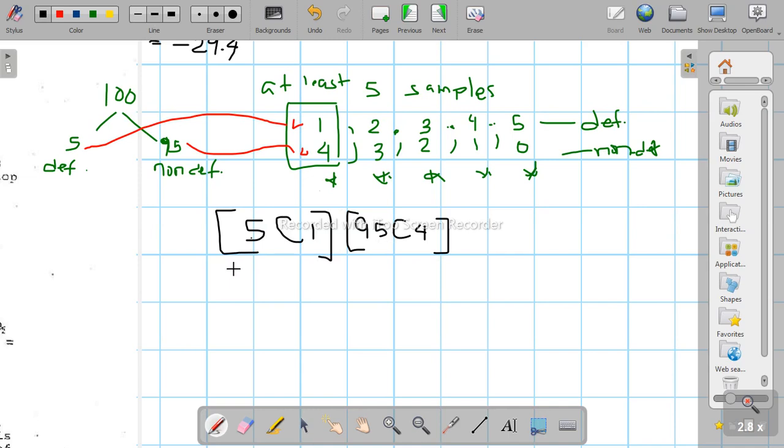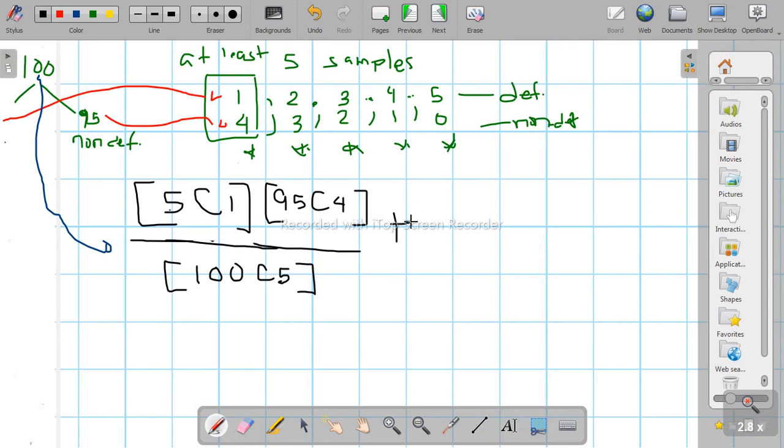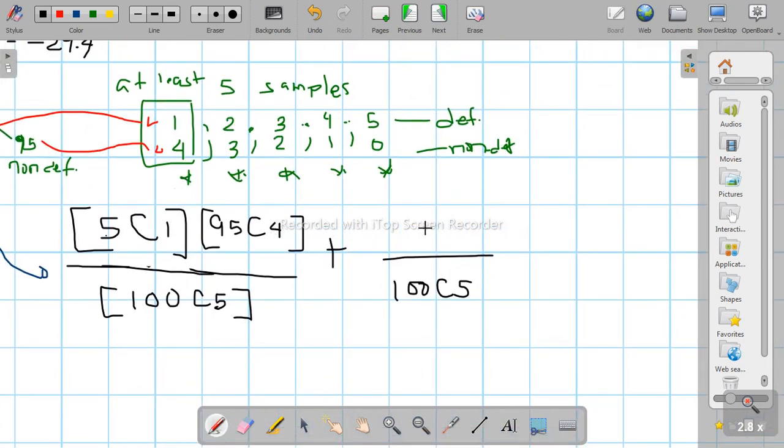How do we count this? We'll count all possibilities and the required cases. For case 1, among the 5 defective, we choose 1, that's 5 choose 1. Among the 95 non-defective, we choose 4, that's 95 choose 4. For probability, the denominator is 100 choose 5, picking 5 from the total 100.